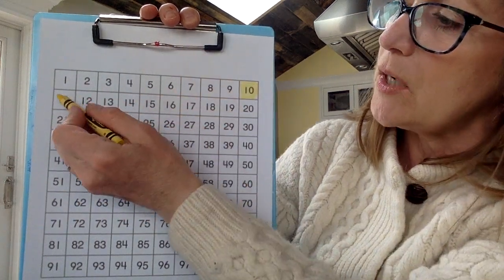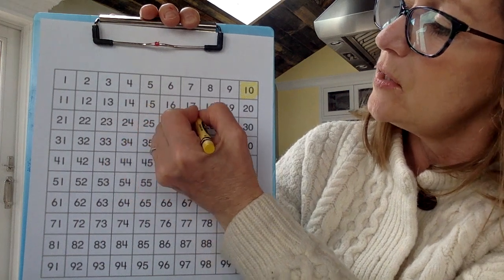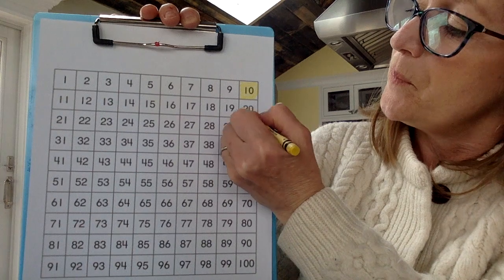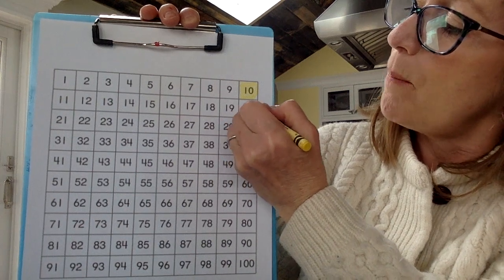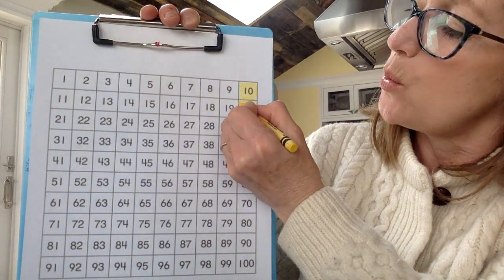After ten we're going to keep counting. One, two, three, four, five, six, seven, eight, nine, ten. That's right. So when we skip count by tens we start at ten and the next number we count is twenty.